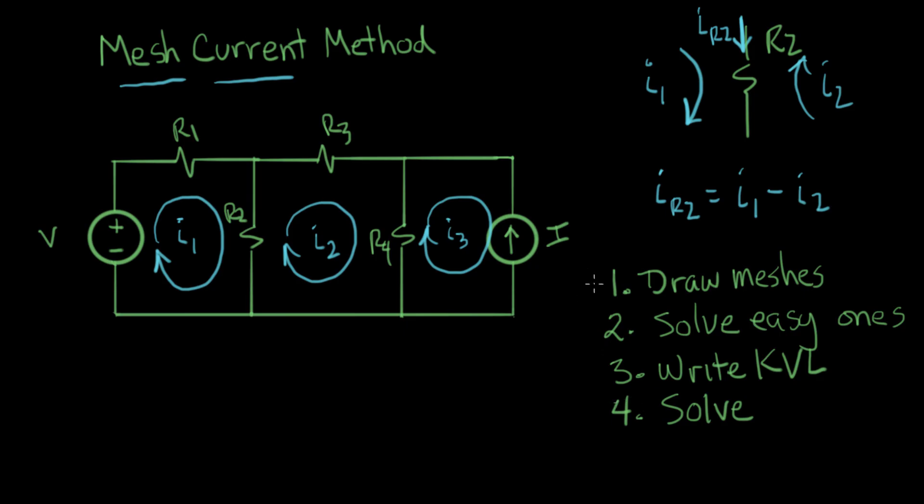Okay, so let's run our mesh current method. Number one, draw the meshes. Here's step one happening right here, so we can check off we did step one. Step two is solve for the easy ones. We think I3 counts as an easy one, and I3 flows down through the current source, so step two is I3 equals negative I.